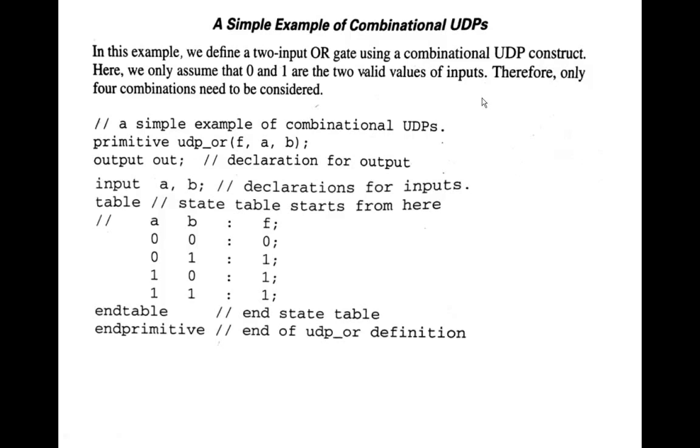So x, we are not taking into consideration. If value is unknown, what could be the output? In that case we are not reading. Only for a given 0 and 1 inputs, what could be the output? That is what the evaluation here.